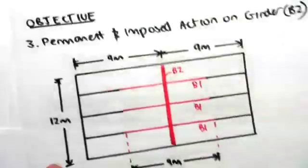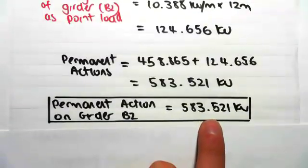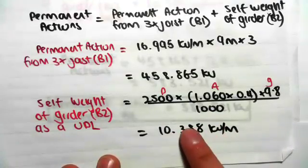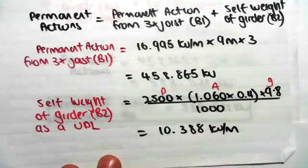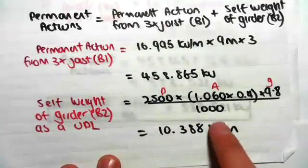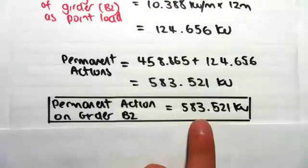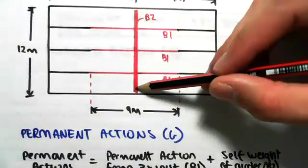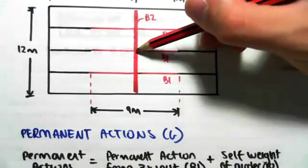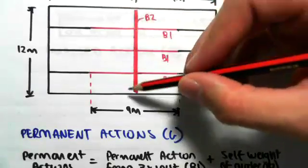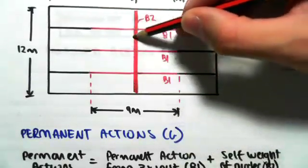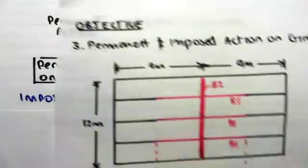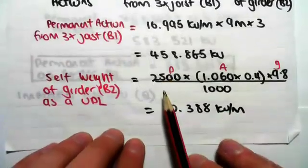The permanent action on girder B2 as a point load is 583.521 kN. I've still worked out the self-weight of girder B2 as a UDL separately — this is important for the next video where we find shear forces and moments. When constructing the free-body diagram, in this girder we have a UDL from self-weight and single point loads from the joists above.